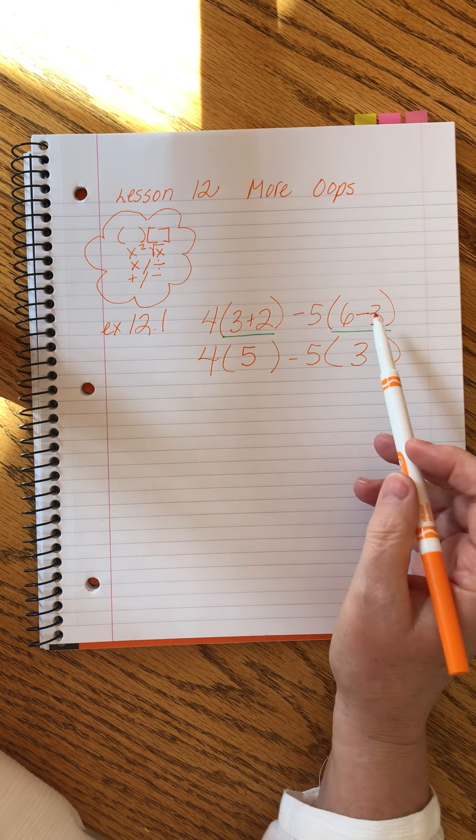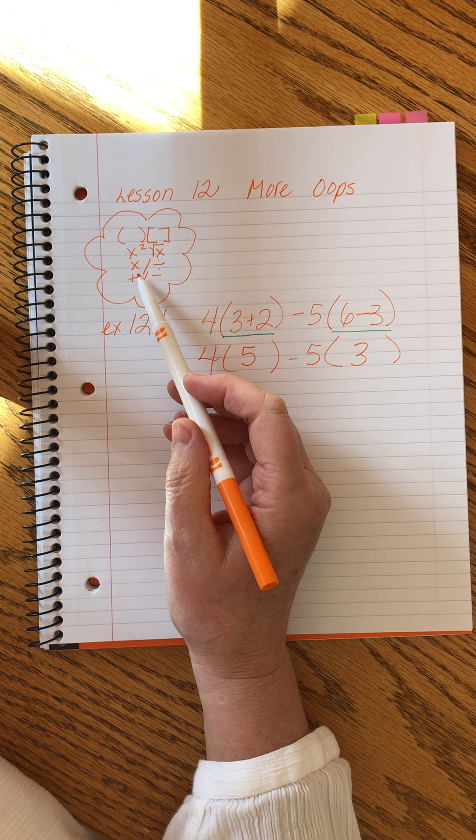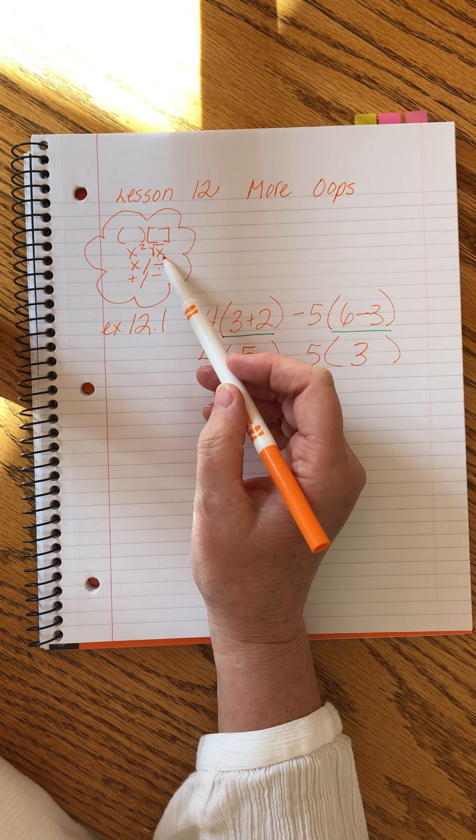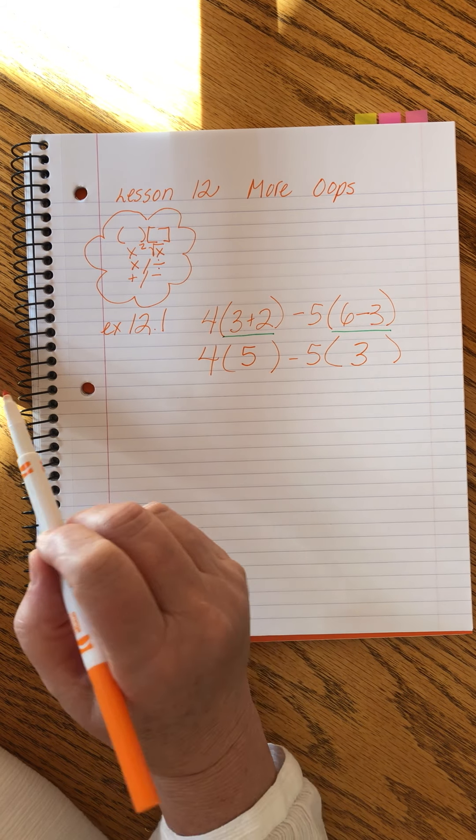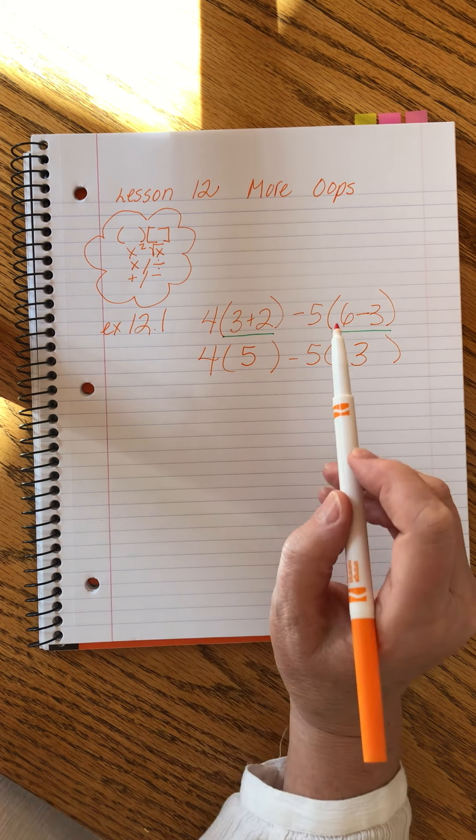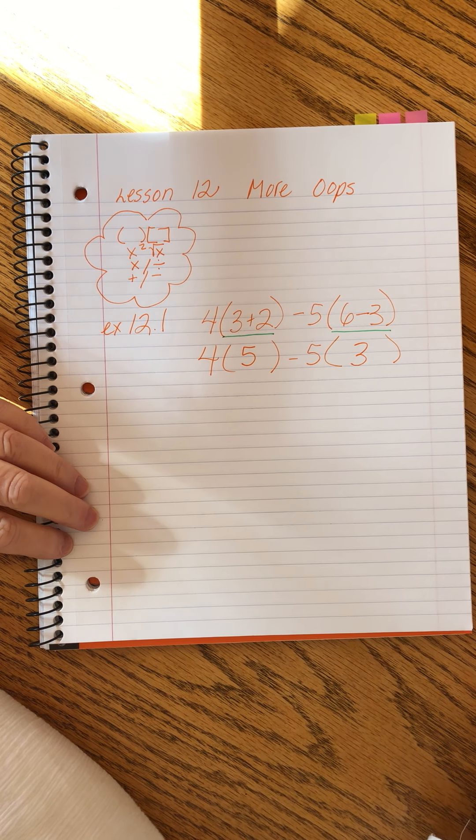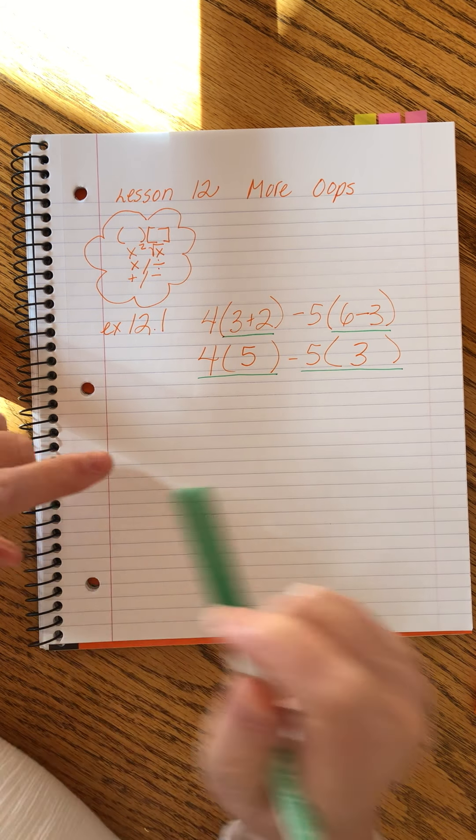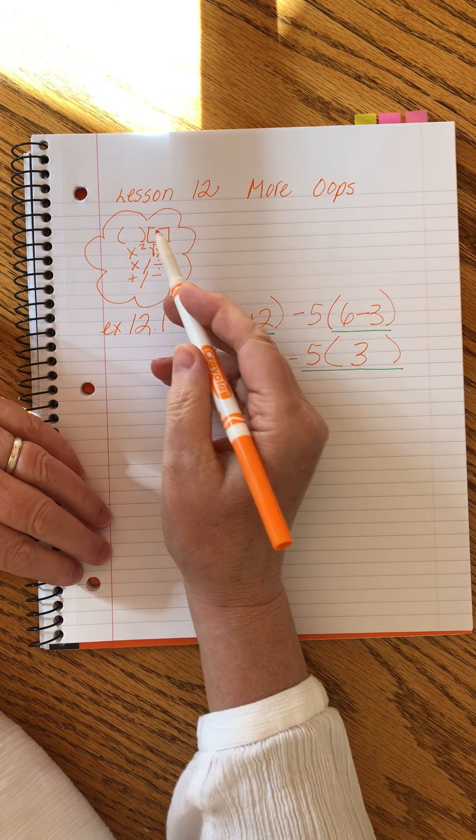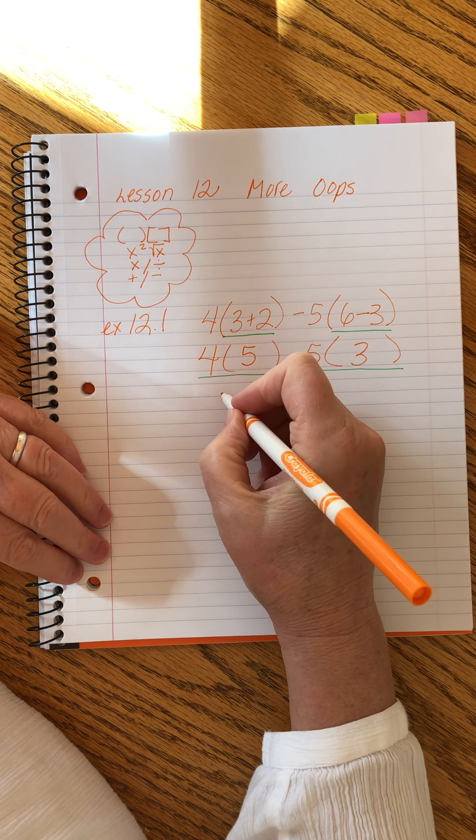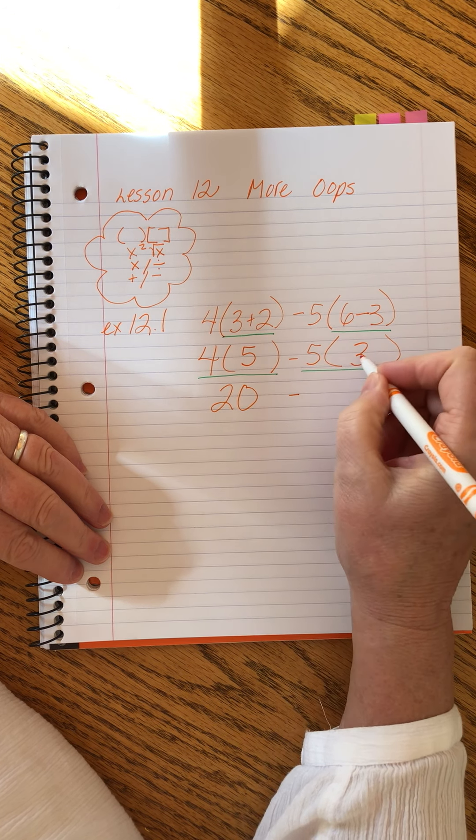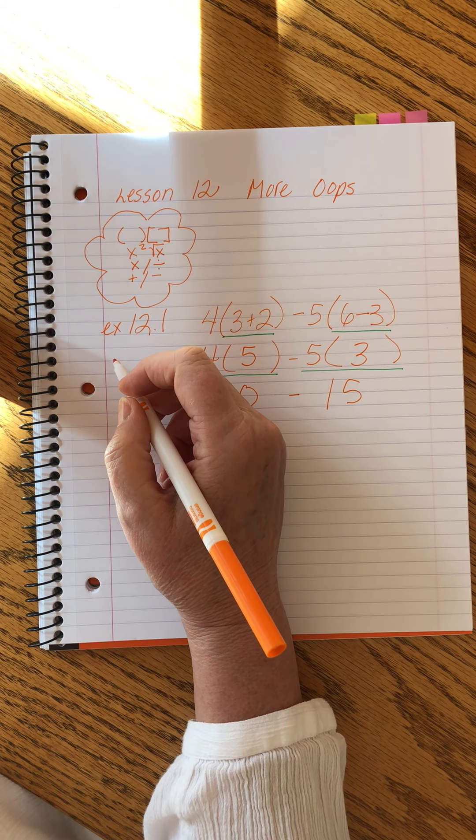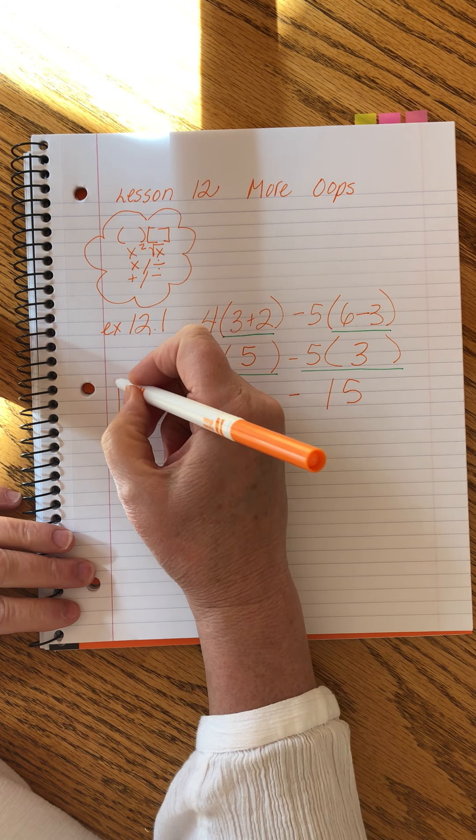So we've done the first step. Now we look for roots or powers. Yeah, nothing. Now we're ready to multiply or divide. We rarely use this kind of division mark in order of operations problems. Instead, we will have fractions. So now we're ready to multiply. We know that in this case, the parentheses now mean multiplication because the work has been done inside of them. Four times three is 15. And our final answer is five. Guess what? That's the right answer. Yay!